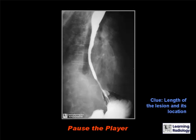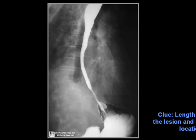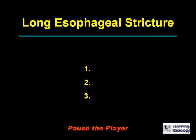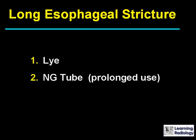The next differential diagnosis is for a long esophageal stricture. There are three causes: Lye, a nasogastric tube which has been left in place for prolonged use, or radiation.